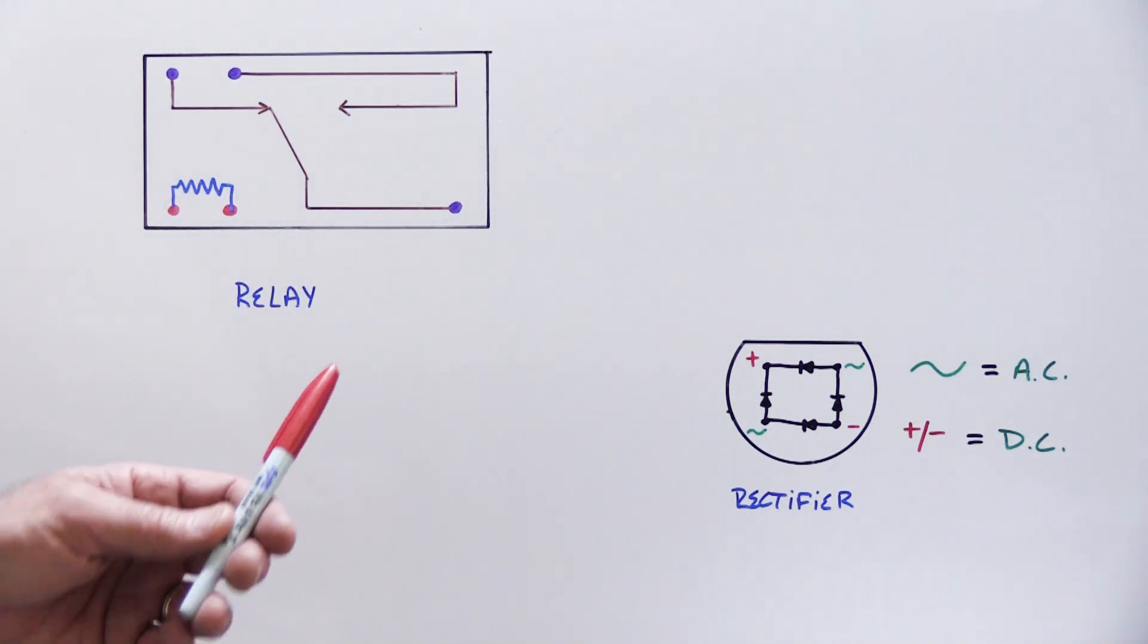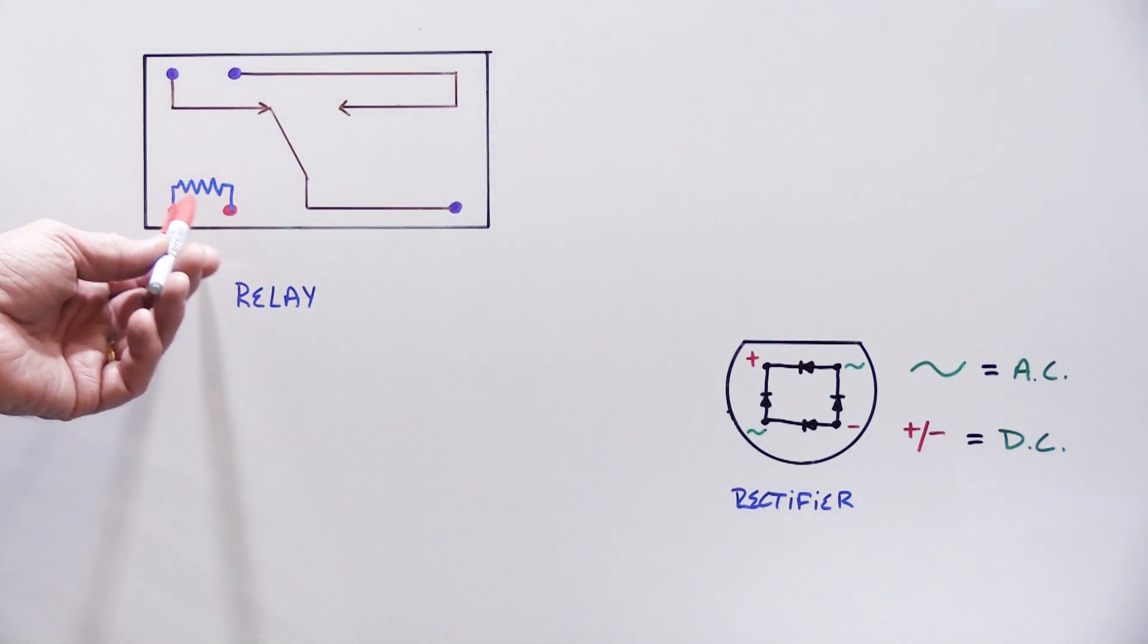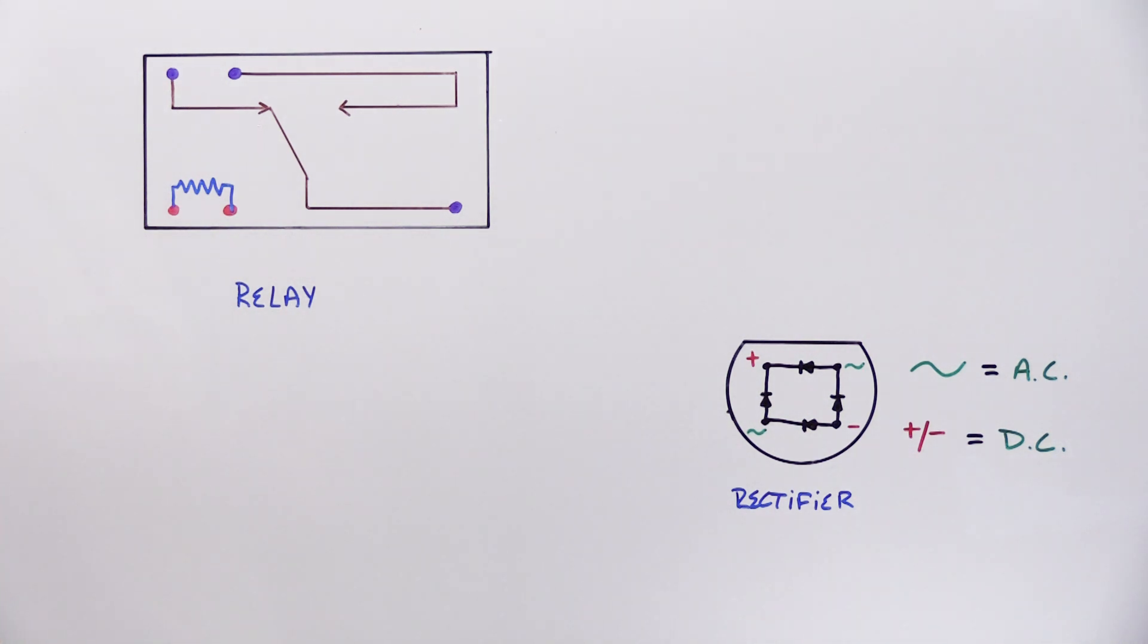In this particular application, the relay and the coil that's in it does not care which way you hook up the plus and minus. It doesn't make any difference. In many, many, many electronic circuits it makes a huge, huge, huge difference on how you hook up the plus and the minus. But for this simple little circuit where we're just activating the relay, it doesn't matter. It doesn't care. It doesn't make any difference.